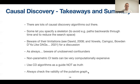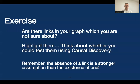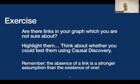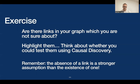Always use causal discovery algorithms as a guide — something to augment your expertise, not replace it. Always check the validity of the resulting graph, because with noisy data you can end up with links that just don't make sense. As an exercise for your own graph: are there links you're not sure about, where the proto-theory is unclear? Highlight these links and think about whether you could test them using causal discovery. Remember that the absence of a link is a much stronger assumption than the existence of one. If you specify a link between A and B and the effect turns out to be zero, you've lost nothing. But if you remove a link that was non-zero, you can't estimate that effect — so always defer to the side of a link rather than an absence of one.